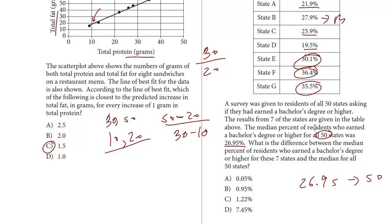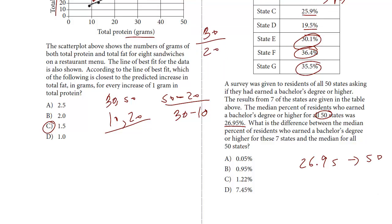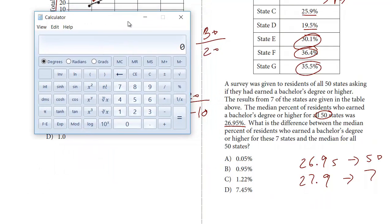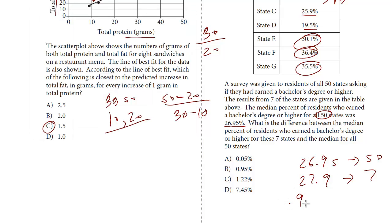Again you could use your calculator. I can tell just by looking at it, these are almost exactly one apart. It's a little bit less than one, it's 0.95, right? It's 27.9 minus 26.95, it's going to be 0.95%. You could use your calculator as well, but the answer here is B.